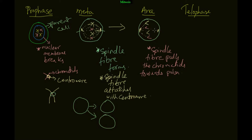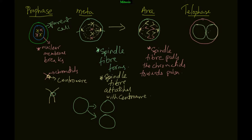The spindle fiber pulls the chromatids towards the poles. In anaphase, because of the pulling of the spindle fiber, both chromatids are separated. Then in telophase, two nuclear membranes form.